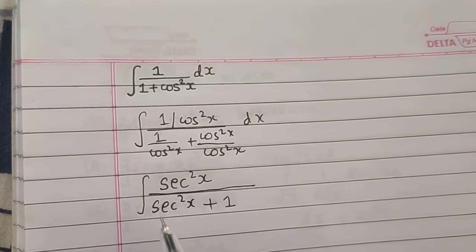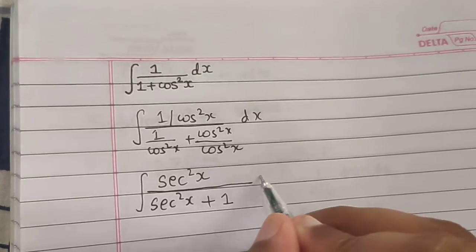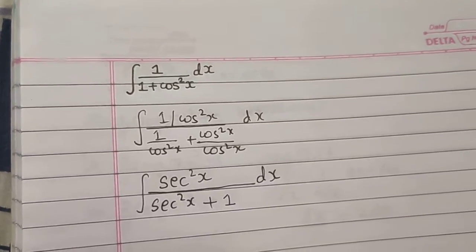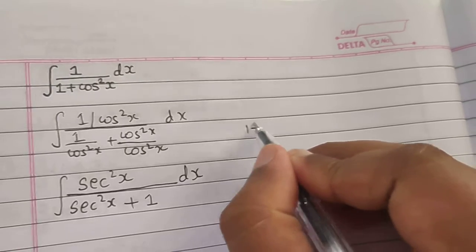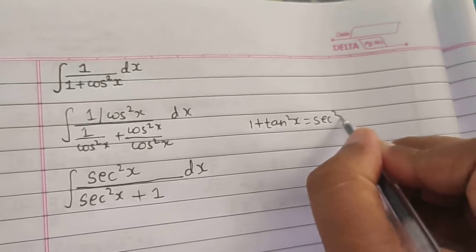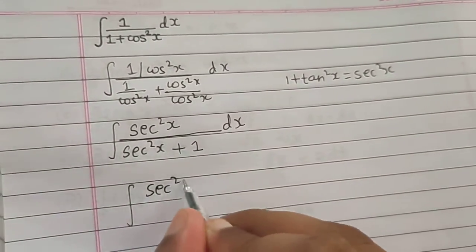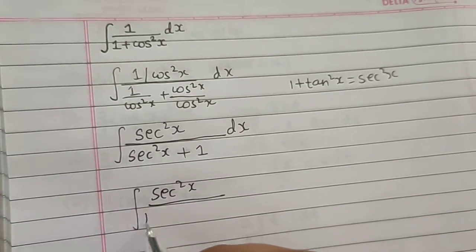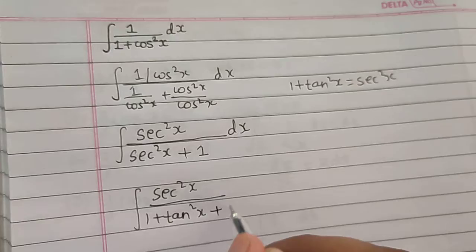I don't want sec²x in the denominator because I am going to substitute tan as t. I know the identity: 1 + tan²x = sec²x. So it is sec²x divided by 1 + tan²x + 1.